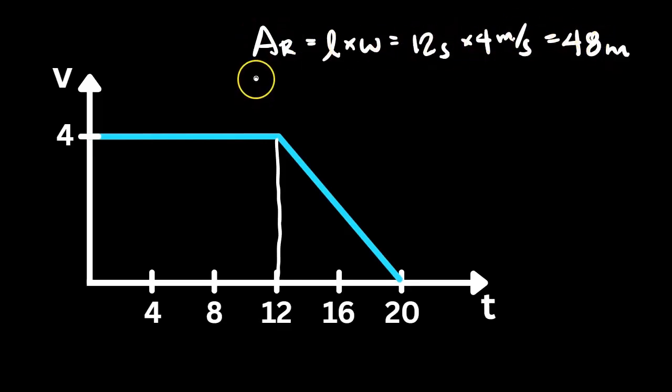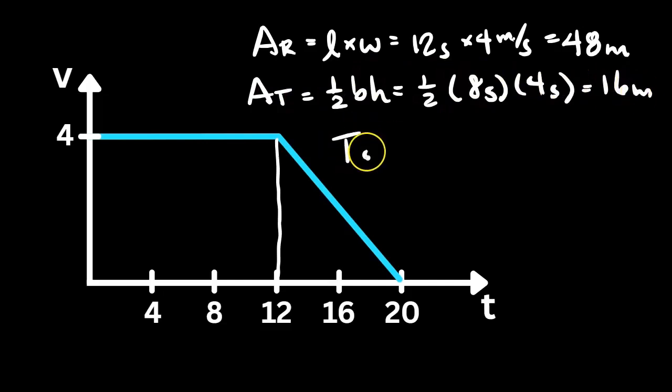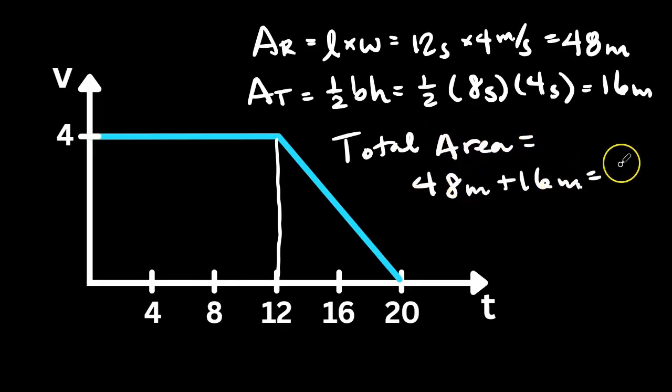Now we're going to calculate the area of the triangle. Combining the area of the rectangle and the area of the triangle will give us the total area, and we get 64 meters. So 64 meters is telling us that this object over the 20 seconds travels a displacement of 64 meters.